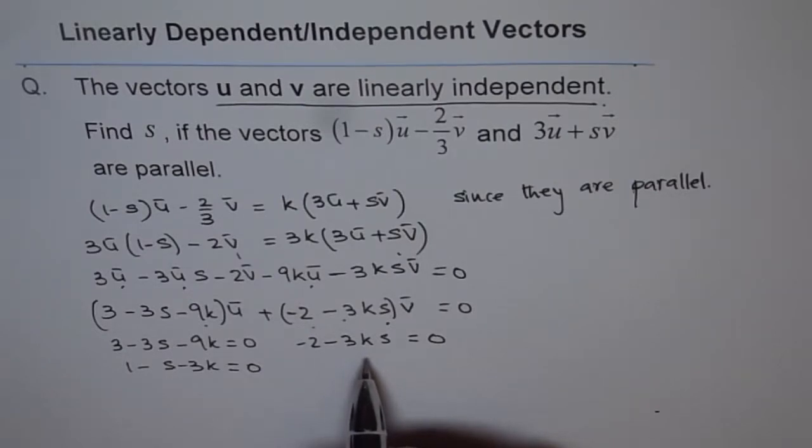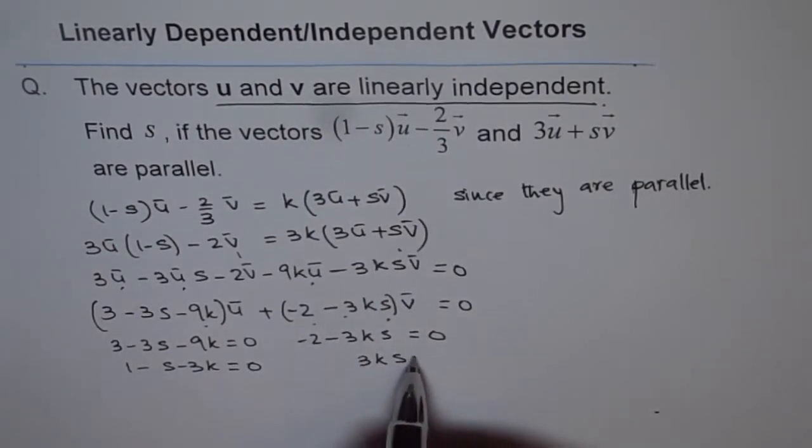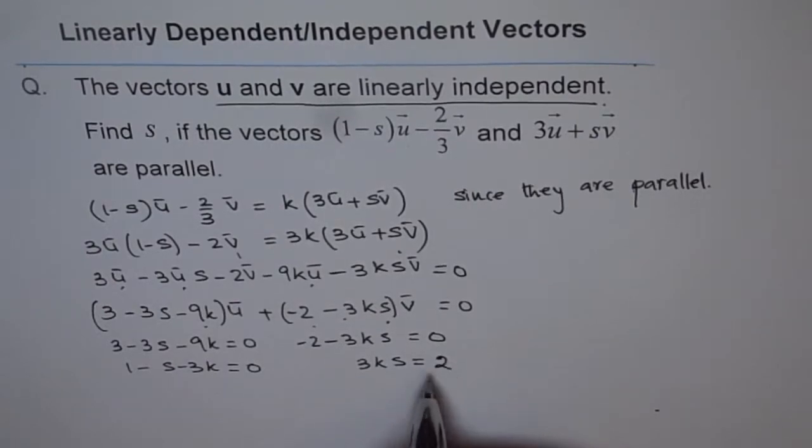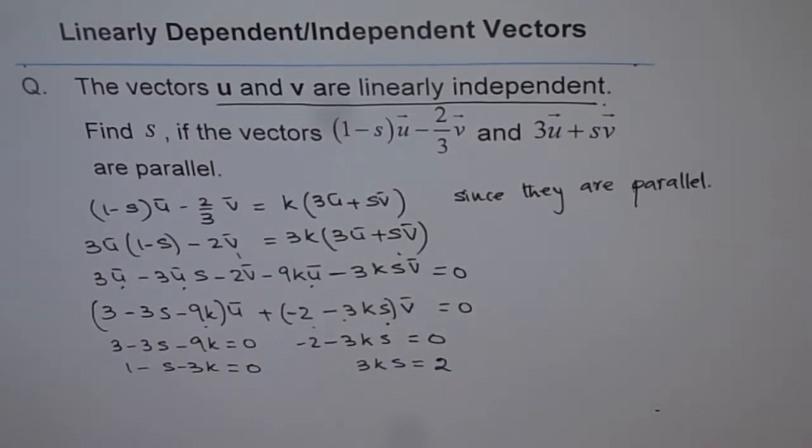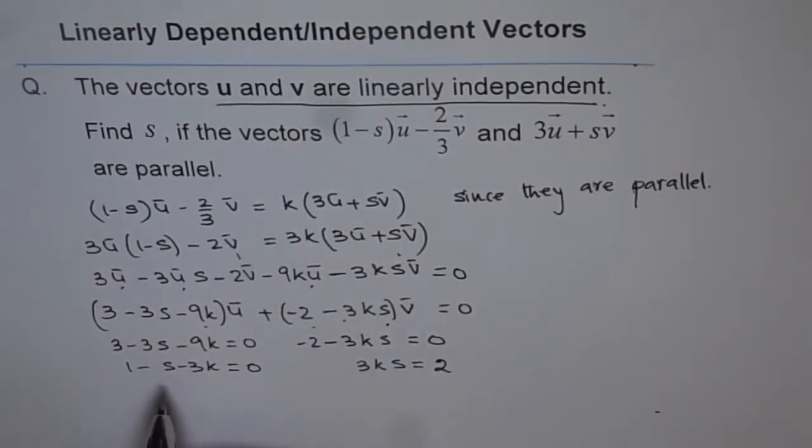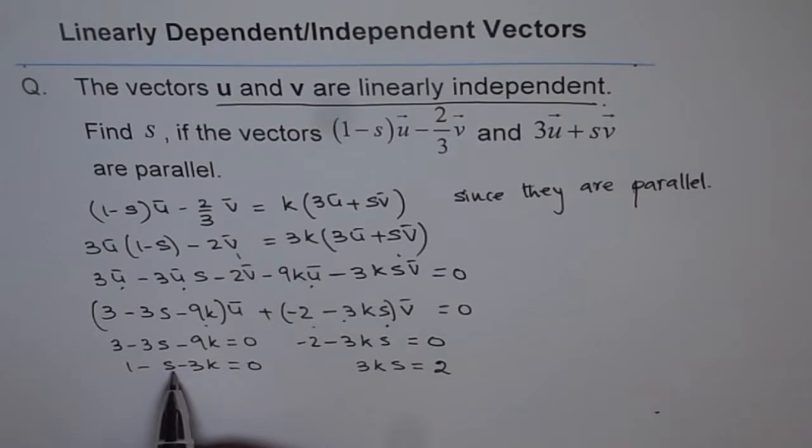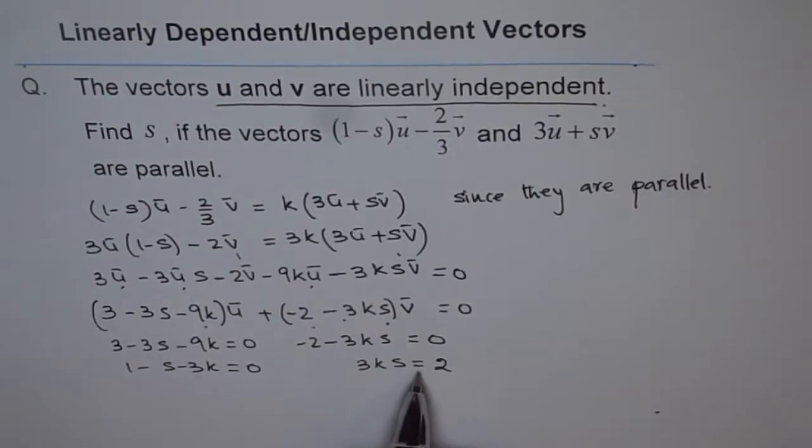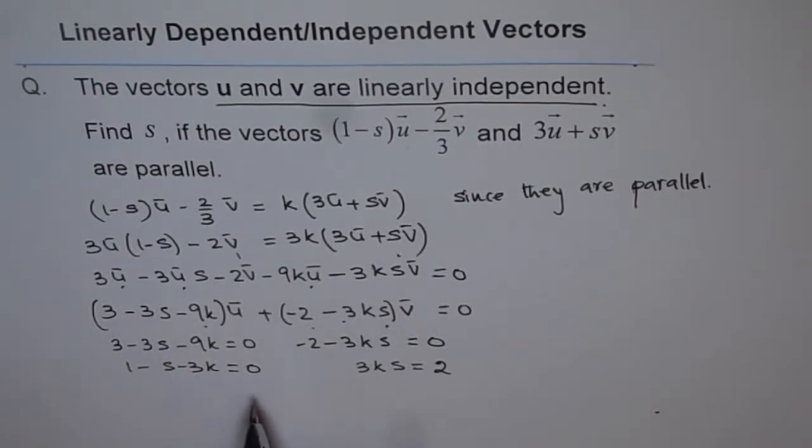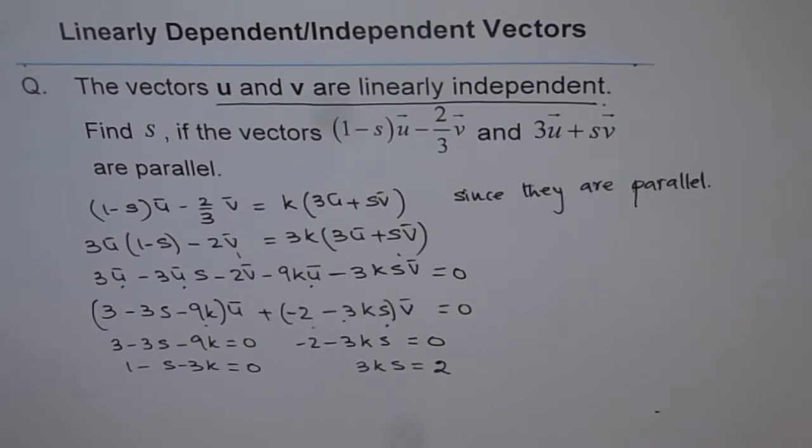And here, from here we can write 3ks equals to 2. And on this side, we have to find the value of s. So, let's write it, what is k in terms of s from here? And we can substitute in that equation. So, let's solve it on the right side.